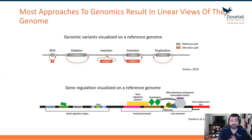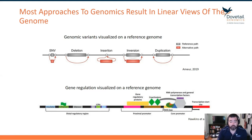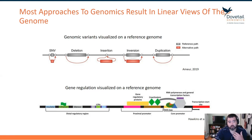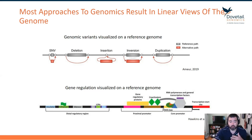ChIP-seq and ATAC-seq build a very nice, powerful image of the linear genome. This has opened up many discoveries and helped build really great models for how various diseases and developmental programs work. But it's not the full picture, because genomes are not organized in a straight line.